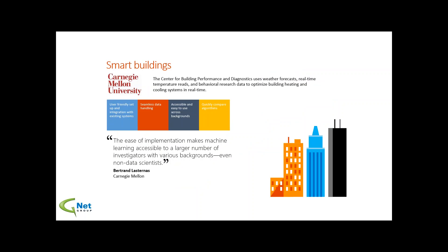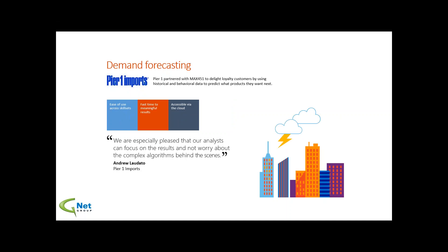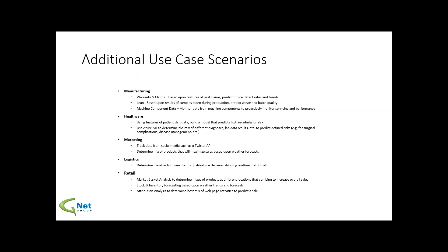Some additional Microsoft success stories: Carnegie Mellon has used Azure ML, looking at weather data to optimize their heating and cooling systems. Pier 1 Imports is using it to predict the products that customers will want. If there's one thing I'd hope you get out of this presentation, it's that everybody in analytics should think a little bit differently now — when you see a business problem, there are new ways you might be able to solve it or provide value to your organization.